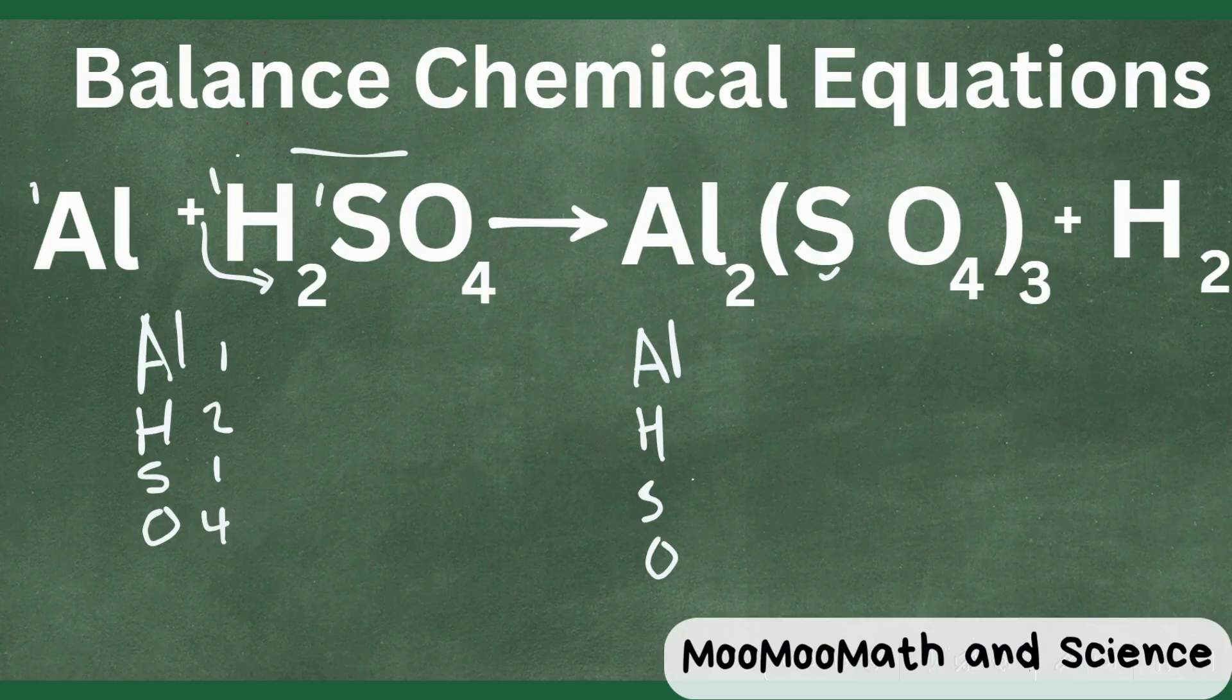Okay now on the other side it looks like we have two aluminum. Now with this polyatomic ion we have this subscript on the outside so that is multiplied by this whole item. So it looks like we have three sulfur and twelve oxygens and then over here for the hydrogen we have two of these.